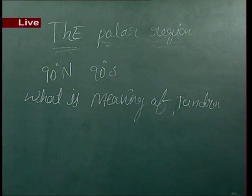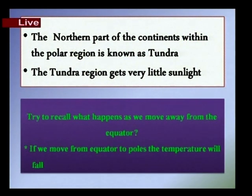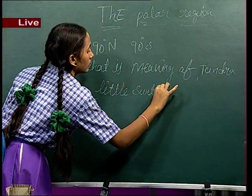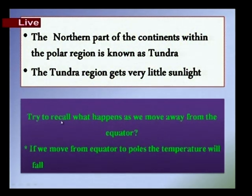The tundra region is extremely cold. The tundra region gets very little sunlight. Try to recall what happens as you move away from the equator — if you move away from the equator to the poles, the temperature will fall.